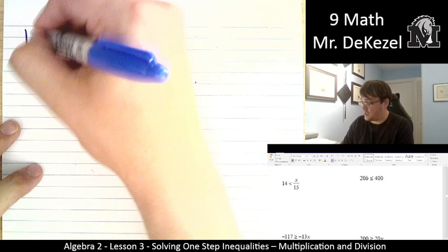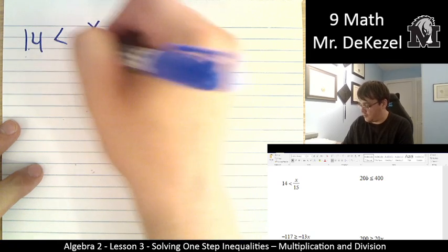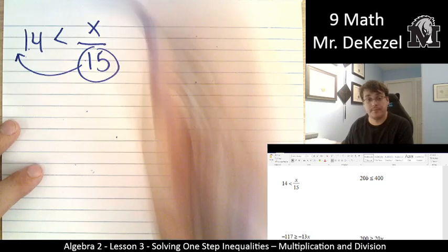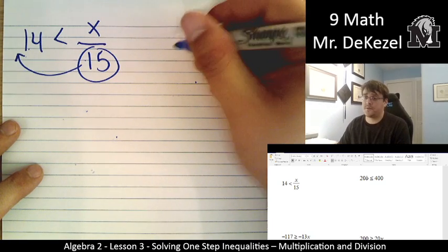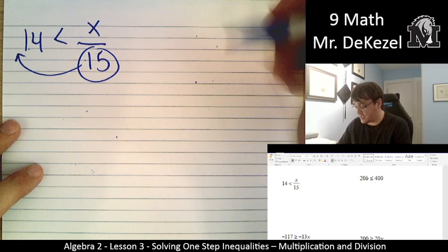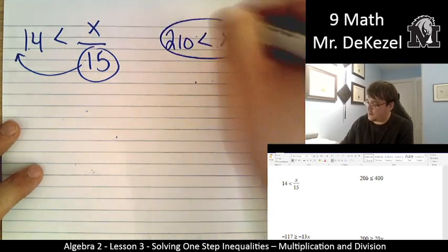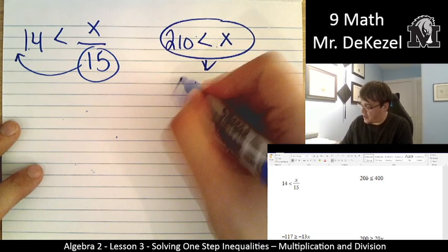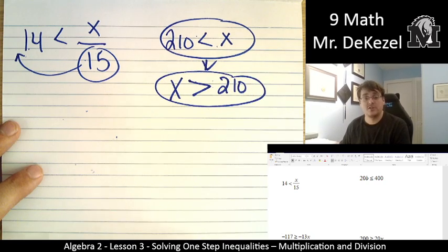We have 14 is less than x divided by 15. We're going to move the 15 up. So that's 14 times 15. I know 15 times 15 is 225, so 14 times 15 has to be 210. So 210 is less than x. Actually, I should flip that around. x is greater than or equal, sorry, greater than 210.